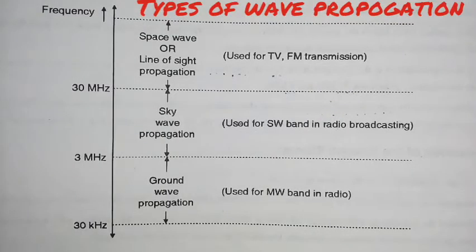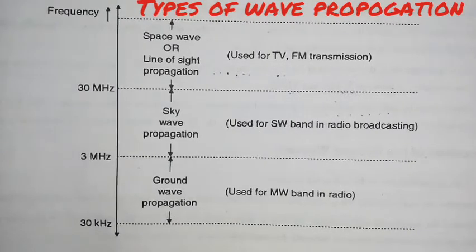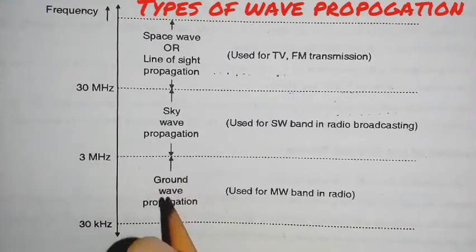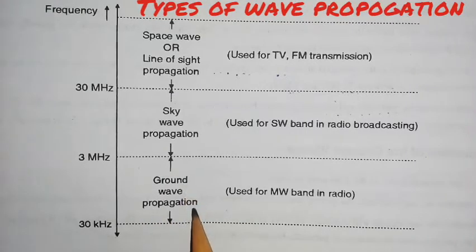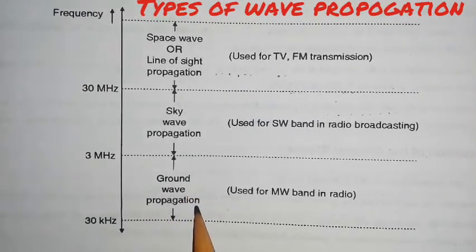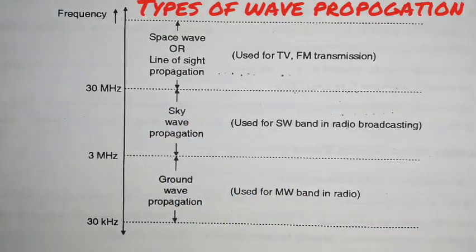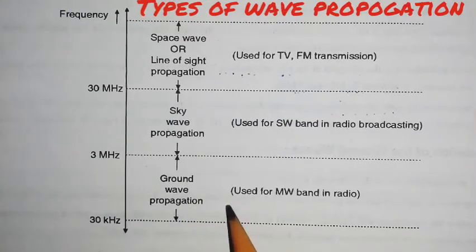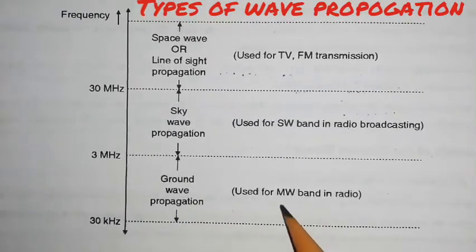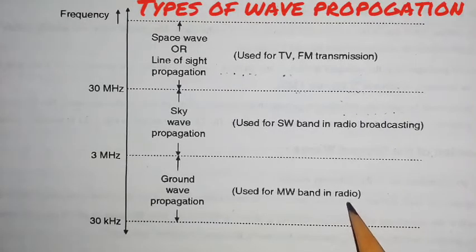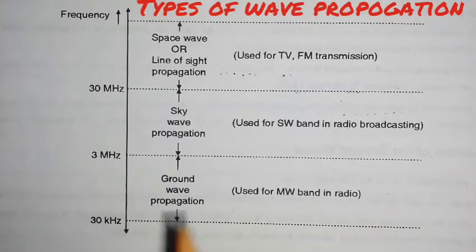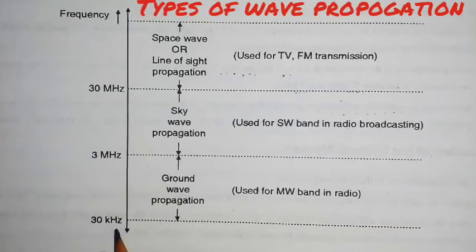Hello students. Today we see the types of wave propagation. The first type is ground wave propagation, which is used for the medium wave band in radio. Its frequency range is 30 kilohertz to 3 megahertz.